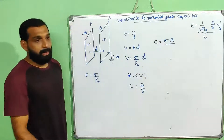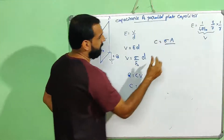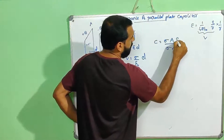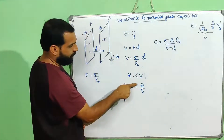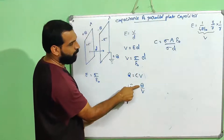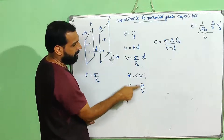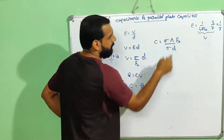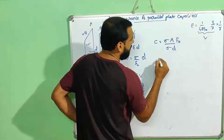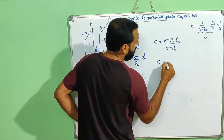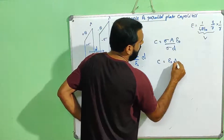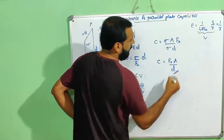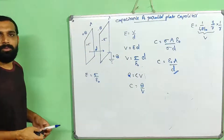V is equal to sigma D by epsilon 0. Q by V equals sigma A into A divided by sigma D by epsilon 0. This simplifies to C equal to epsilon 0 A by D.